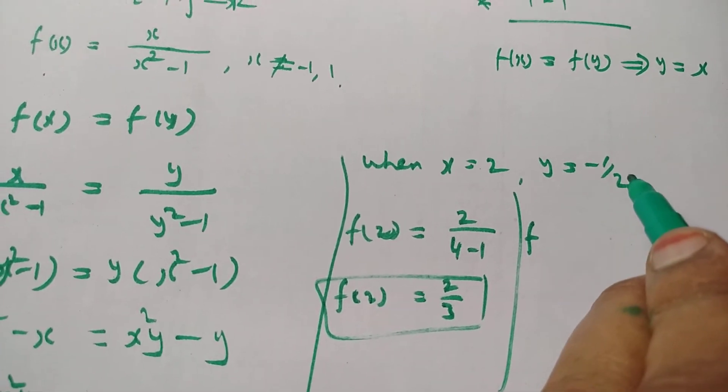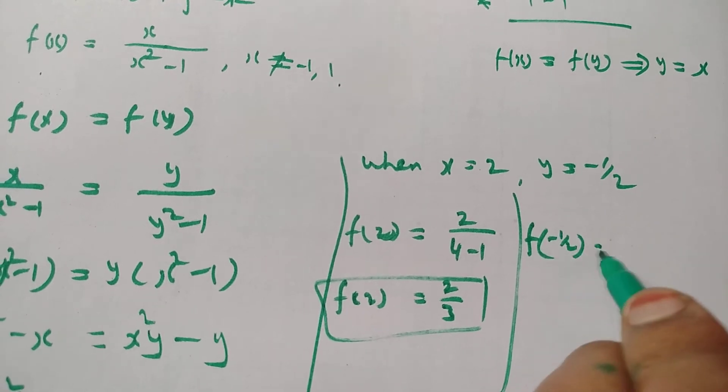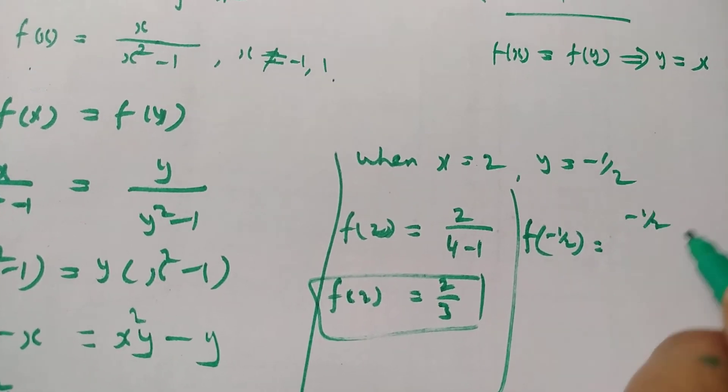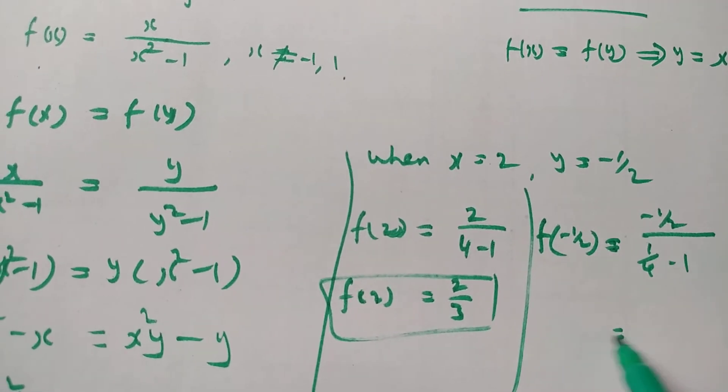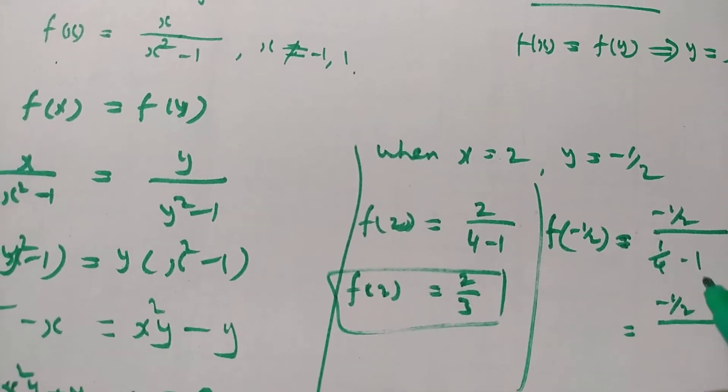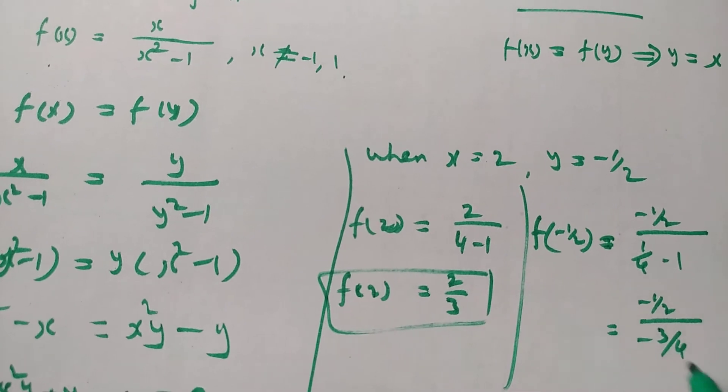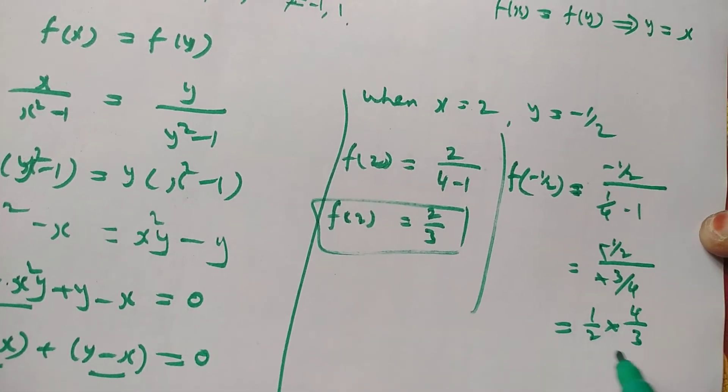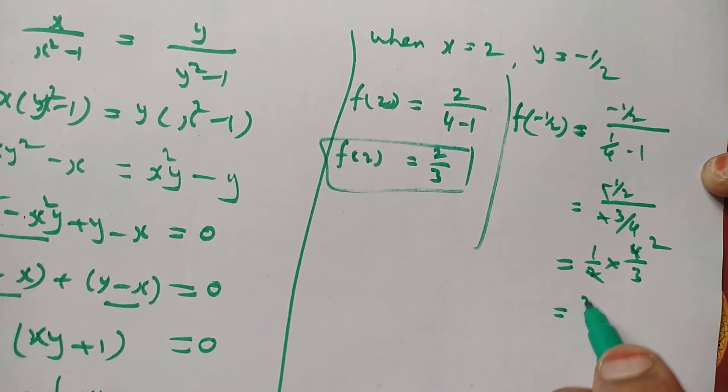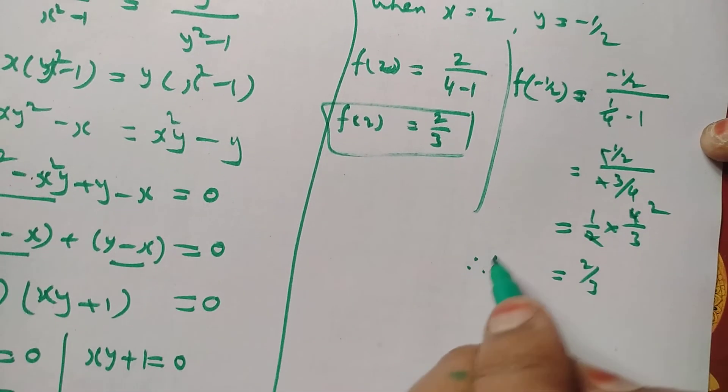When y = -1/2, then f(-1/2) = (-1/2)/((-1/2)² - 1) = (-1/2)/(1/4 - 1) = (-1/2)/(-3/4) = (1/2) × (4/3) = 2/3.